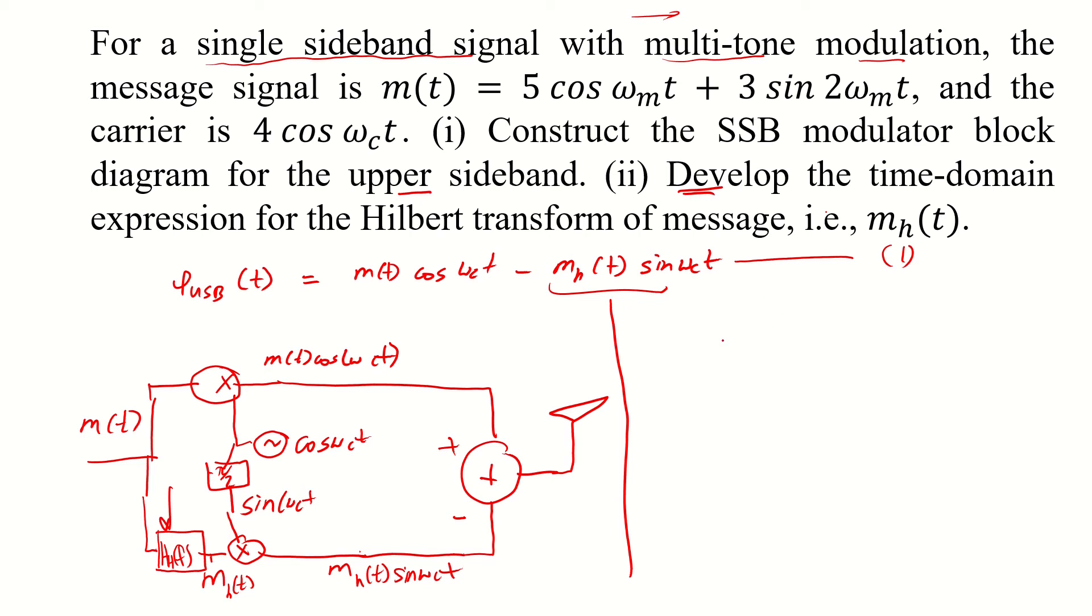So we know that this filter, h h of f, is simply having a characteristic like this: we are having a plus pi by 2 for negative frequencies and then we have a minus pi by 2 for positive frequencies that are in radians per second. So this is our zero.